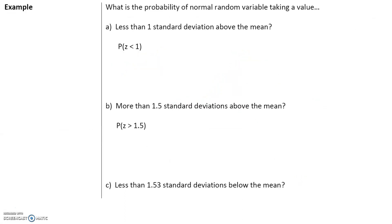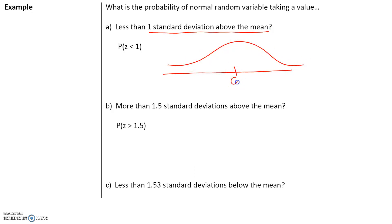Here's an example: What is the probability of a normal random variable taking a value less than 1 standard deviation above the mean? Let's break this down. For a standard normal curve, the mean is always 0 and the standard deviation is always 1. So 1 standard deviation above the mean means we would be at 1, and we want the area to the left of 1, which gives the probability that a normal random variable takes a value less than 1.